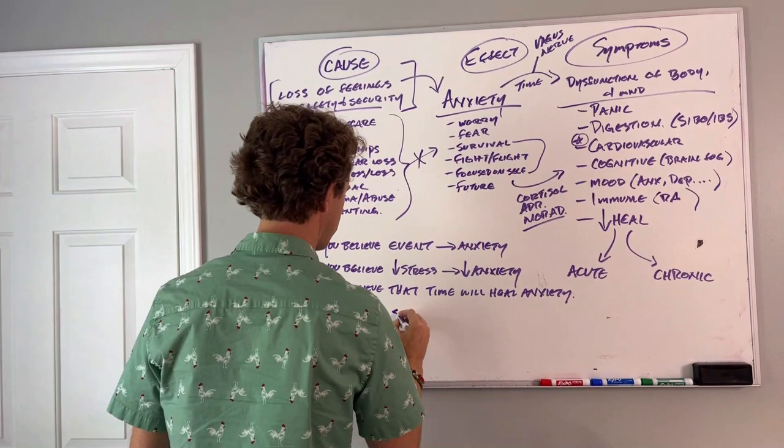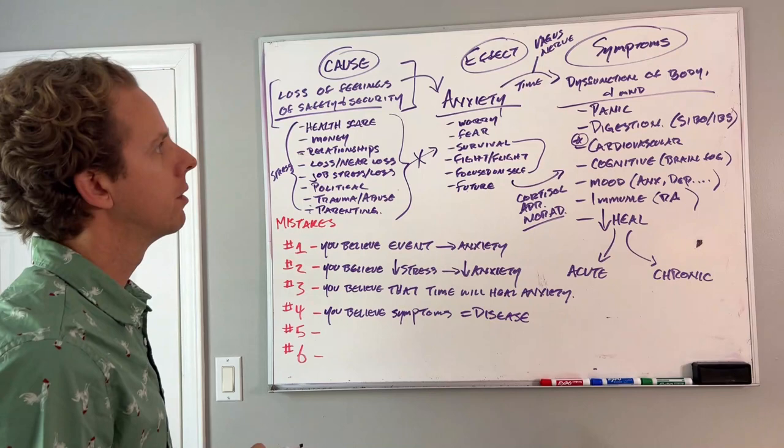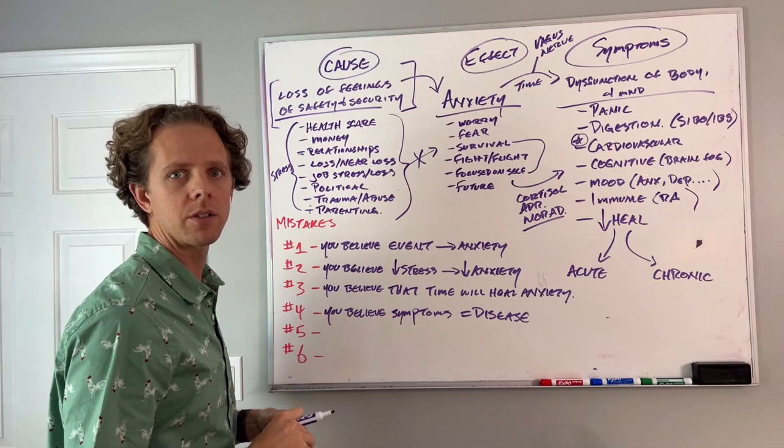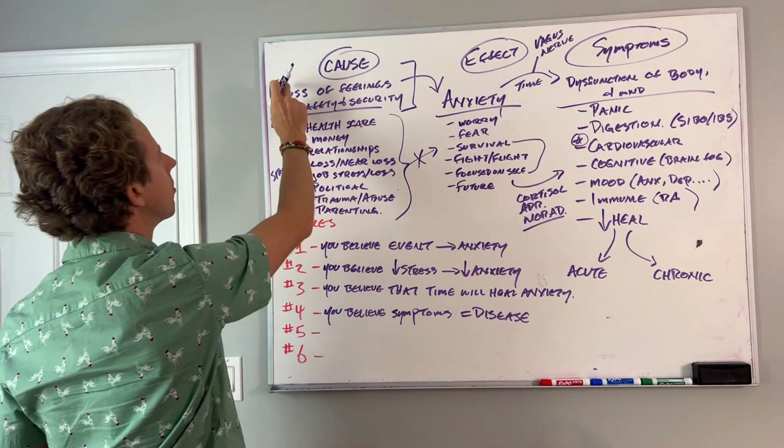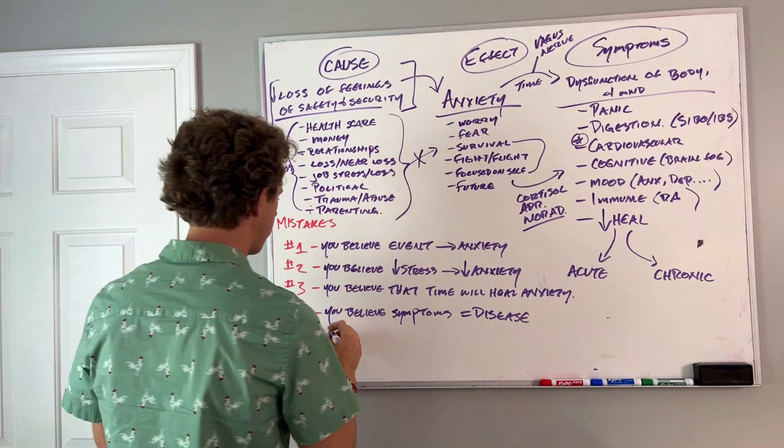This leads us to the last three mistakes. Mistake number four: you believe that some of these symptoms that you've been experiencing equals some sort of disease. That's got you really concerned. The fact that you think that you might now have cancer, some sort of autoimmune issue, some sort of genetic thing going on, something that's difficult or impossible to truly treat. What does it do? Circles back over here and further decreases feelings of safety and security. You get into this negative feedback loop.